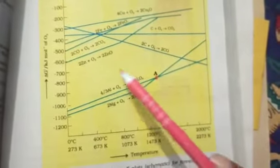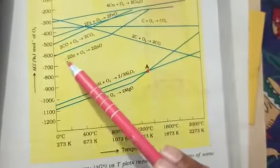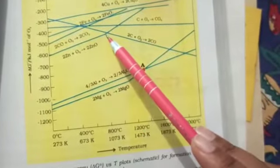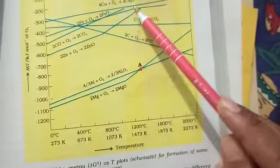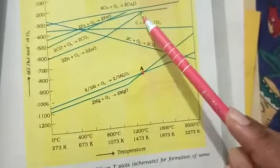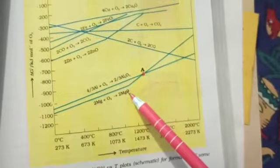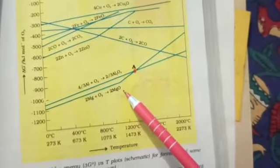But in a few cases, like in this and this, this is not a straight line. Up to a certain temperature it is a straight line, but after that it shows a positive slope.